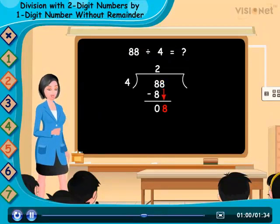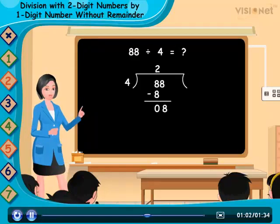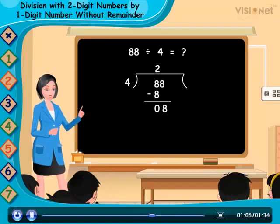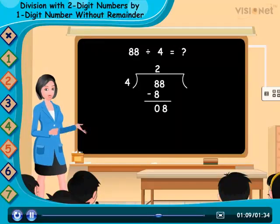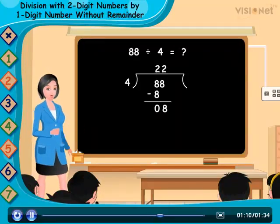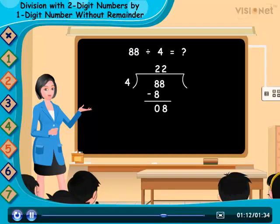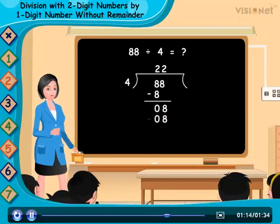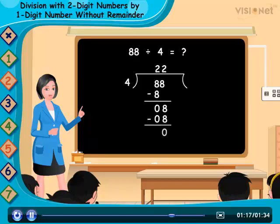Now divide 8 by 4, that is 8 divided by 4, which gives 2. So write 2 in the ones place of the quotient and write 8 below 8. And subtract 8 minus 8, which gives 0.